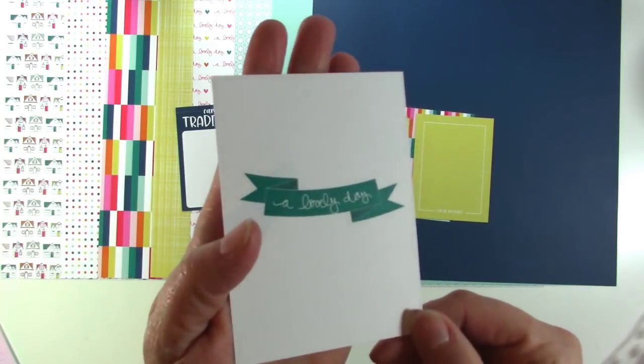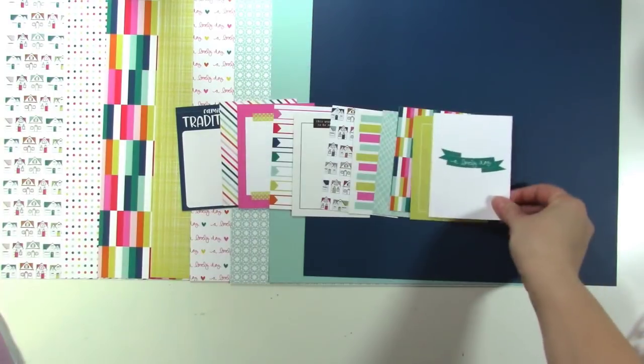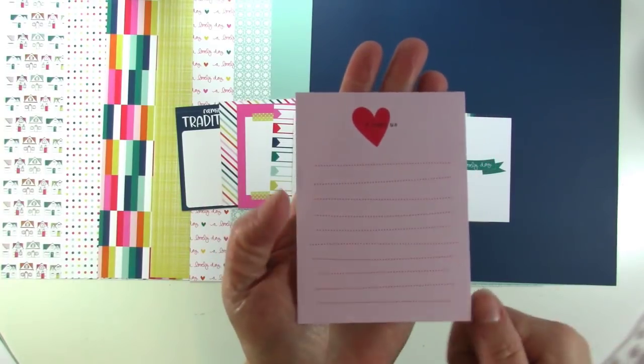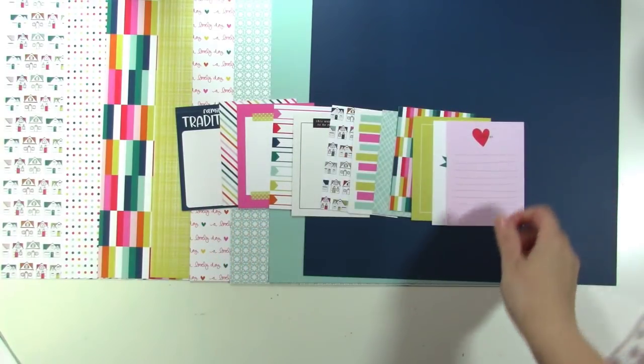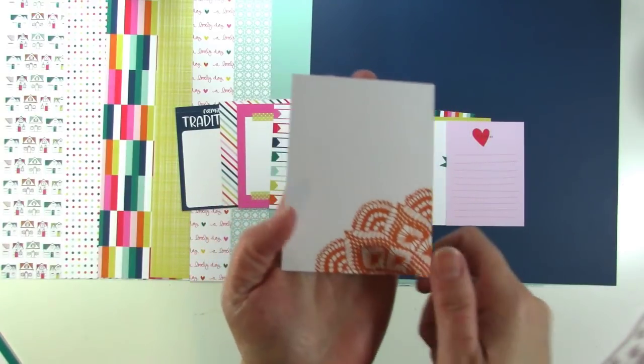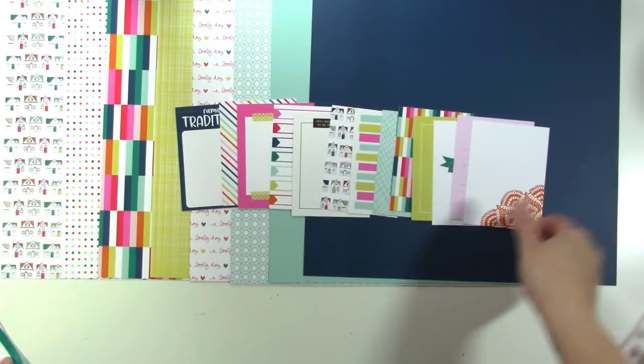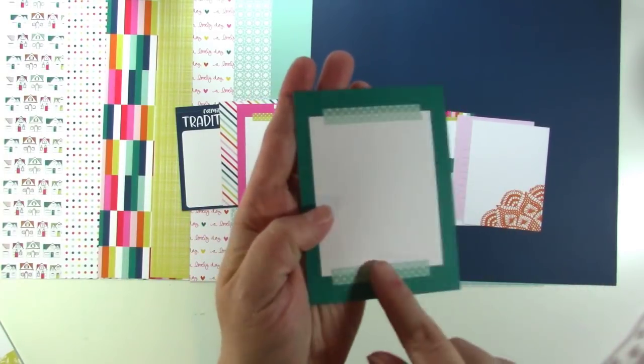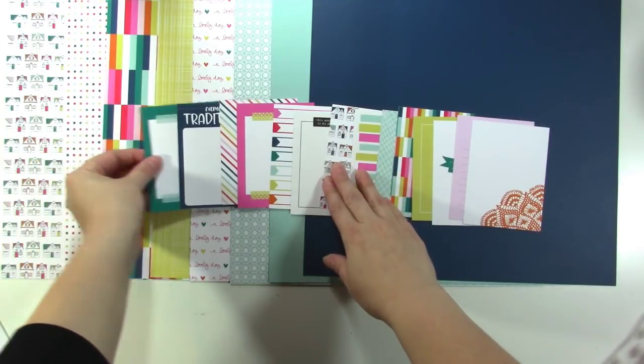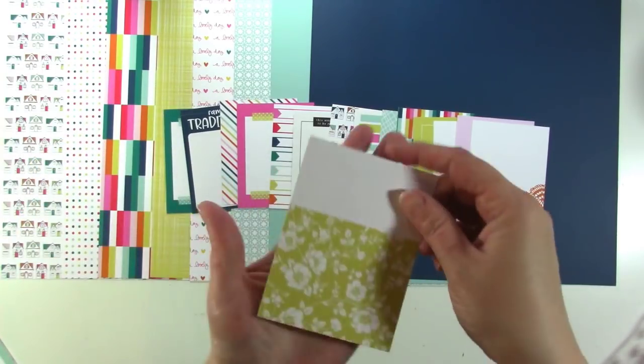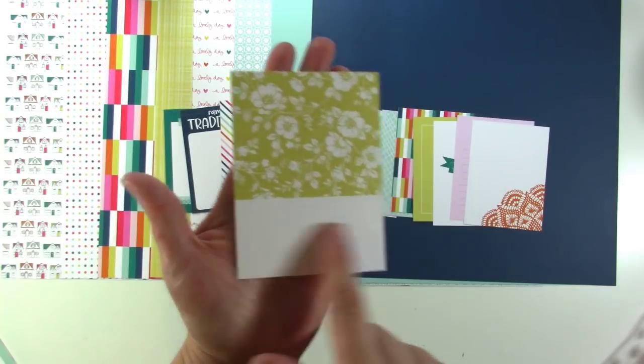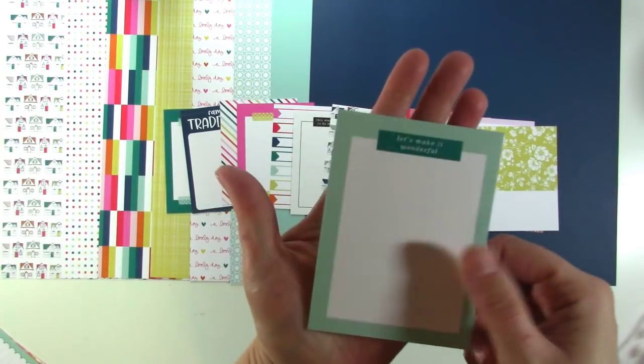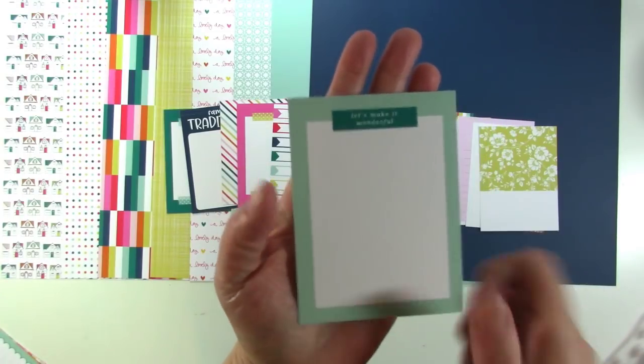Then we have this one that says A Lovely Day on a little banner, nice and simple. And the back of that one says I Love Us, that's really cute. Then this one is an orange doily just in the corner there. And then we've got another one like that yellow card that has the teal on it with some washi strips at the top and bottom. We've got a card that has that yellow floral and then just some space down here that you could write or stamp in. And then the back of that one says Let's Make It Wonderful, I love that card, really cute.